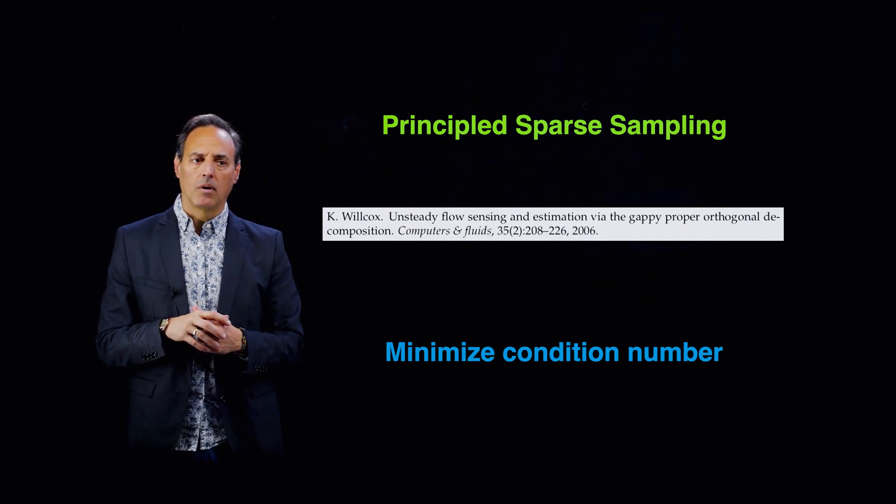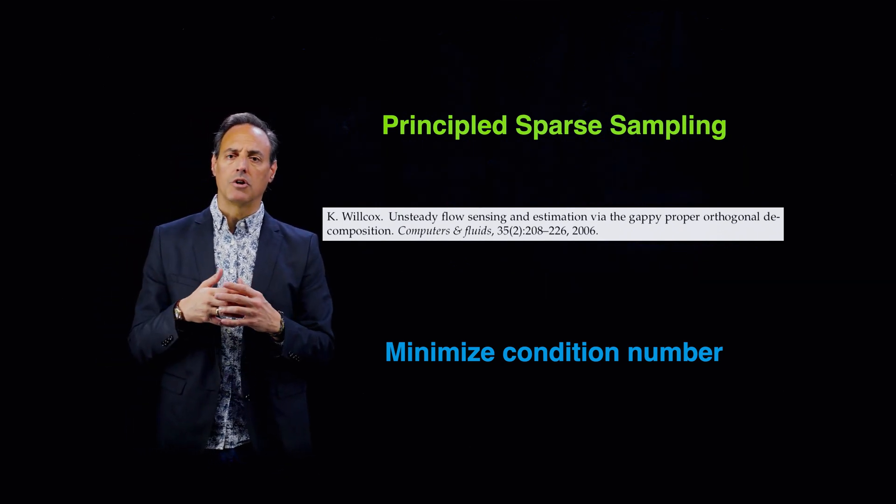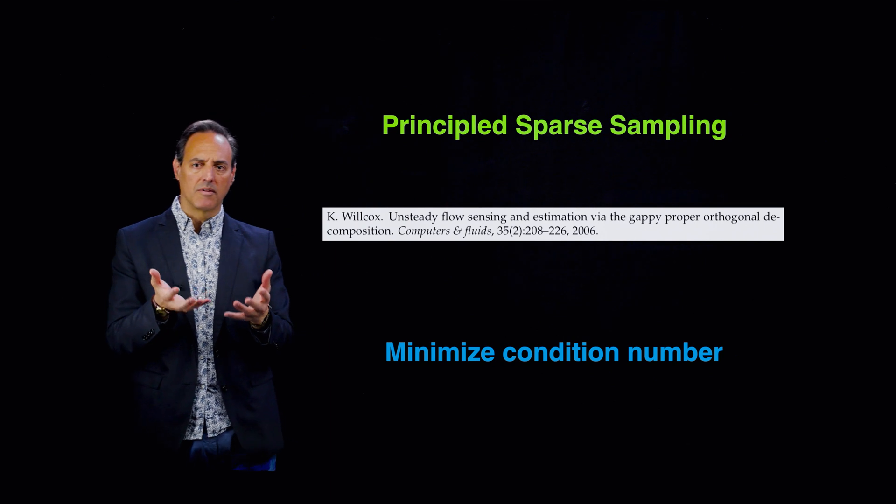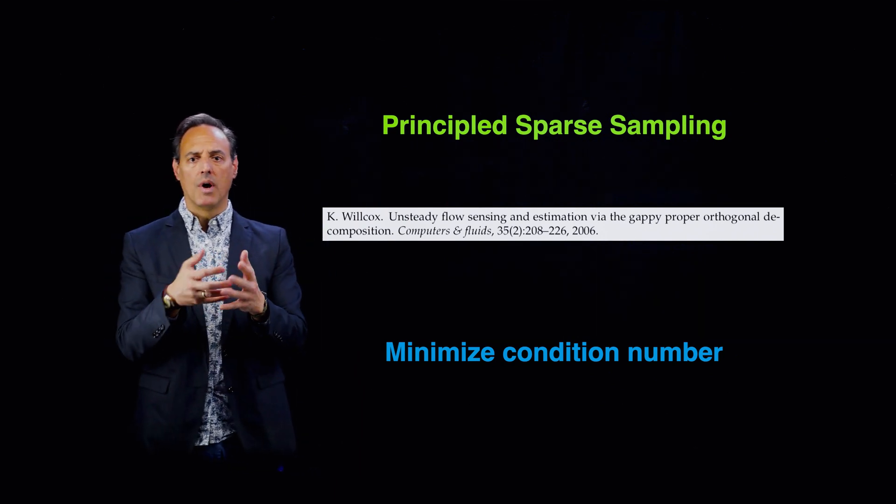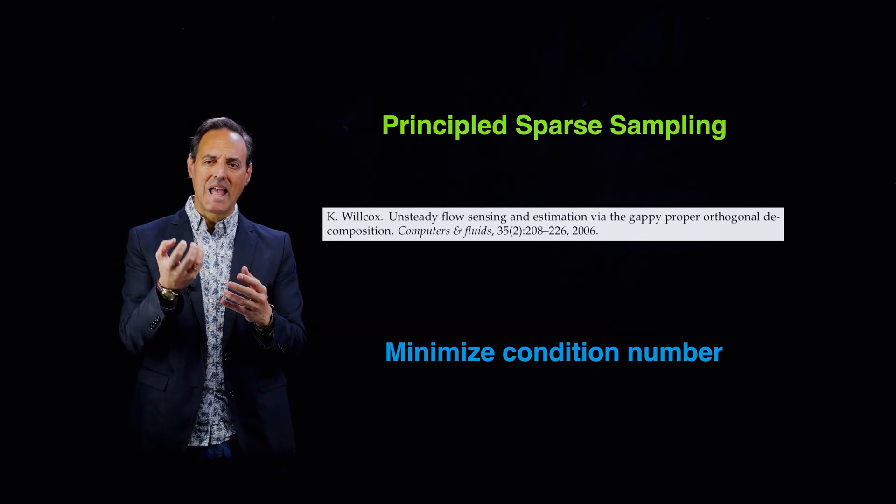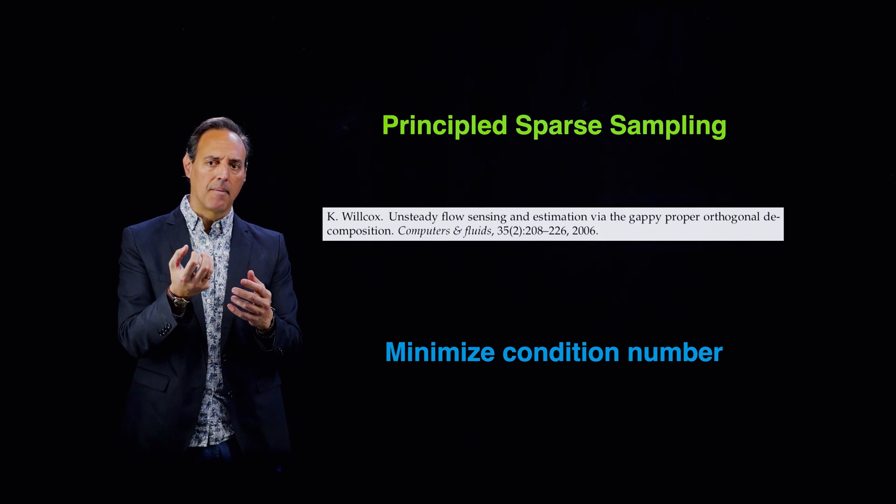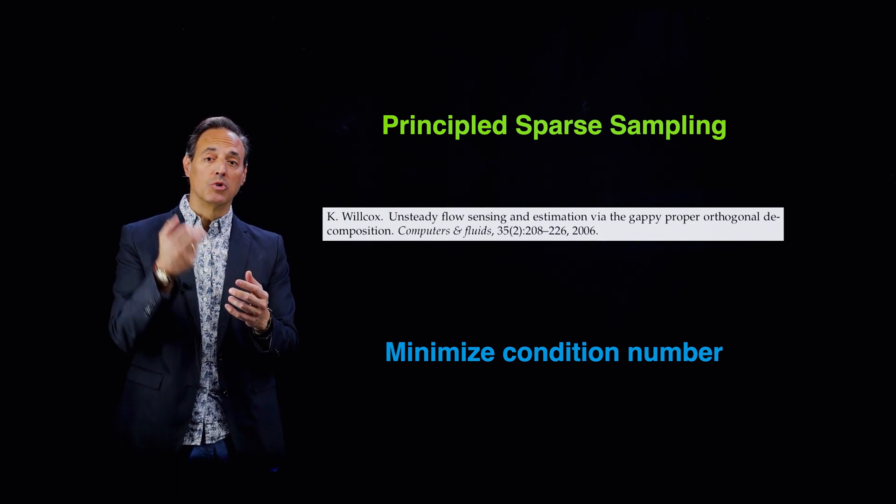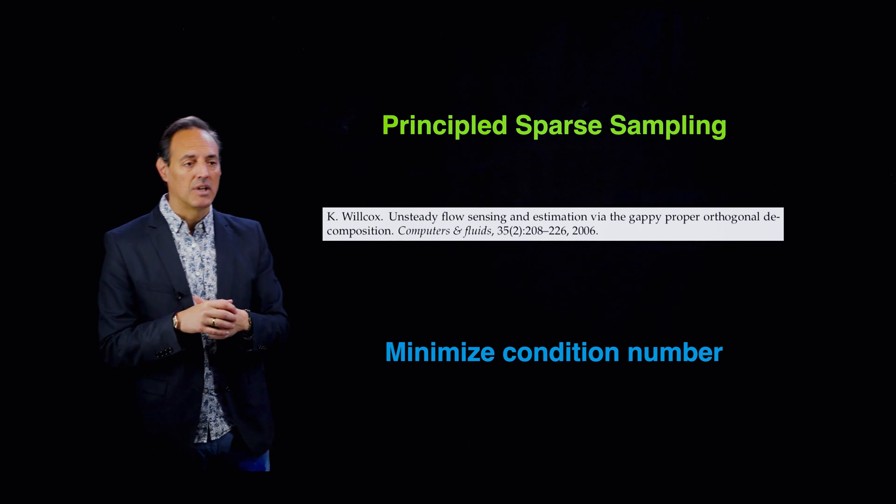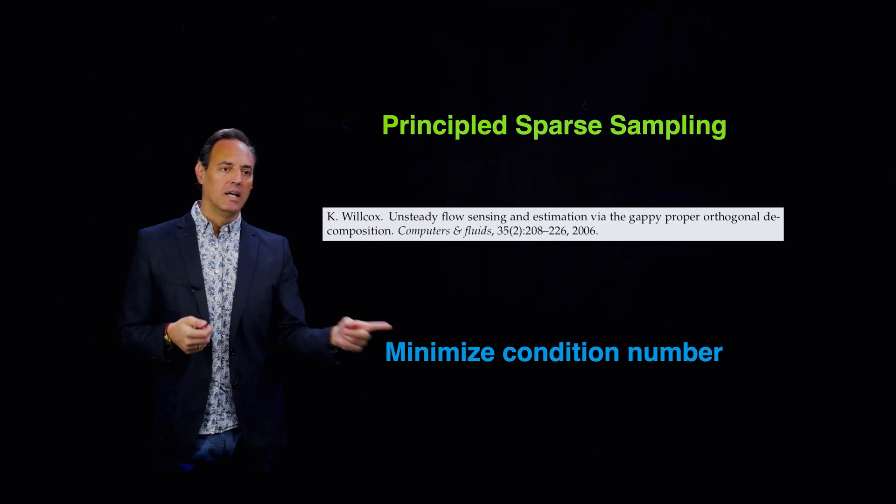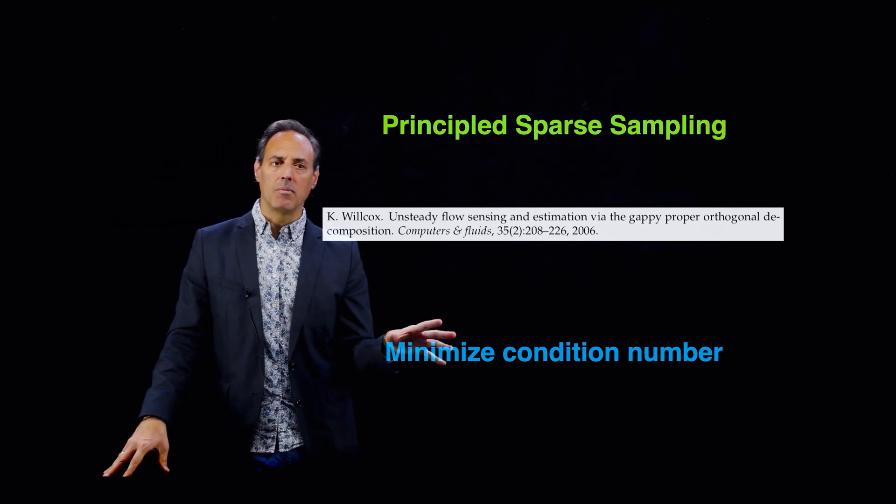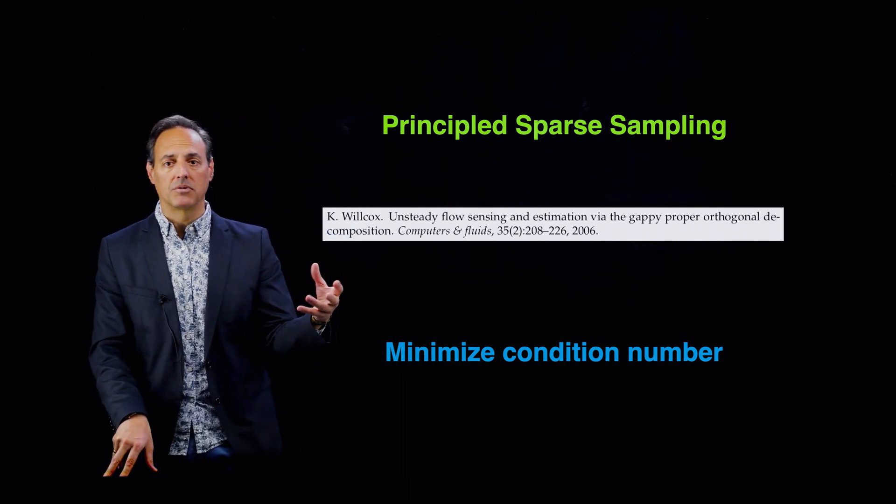We looked at the error and also the condition number of this measurement subspace or the support space of the measurements. One of the key indicators was that when you look at this measurement subspace, the condition number was one in the ideal case and went to essentially infinity when you do really poorly. The idea is to take this condition number and try to minimize it. This is exactly what Wilcox proposed: come up with an algorithm to figure out how do we minimize the condition number, and in so doing we probably will be able to select good sparse sensing locations.